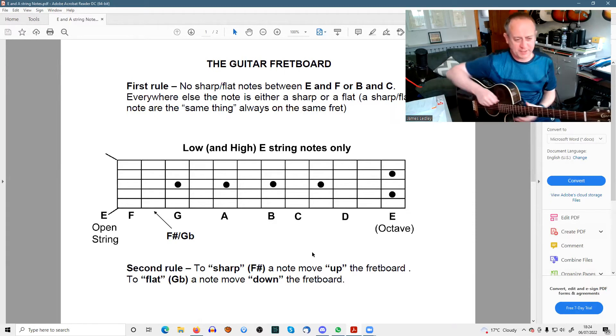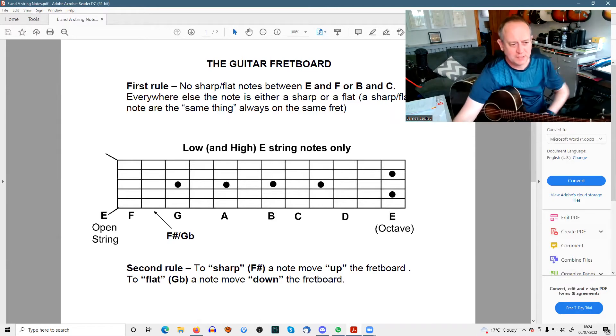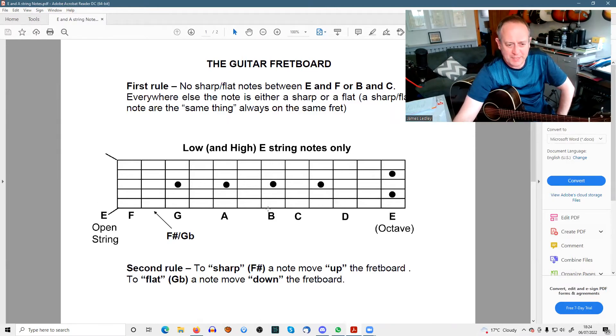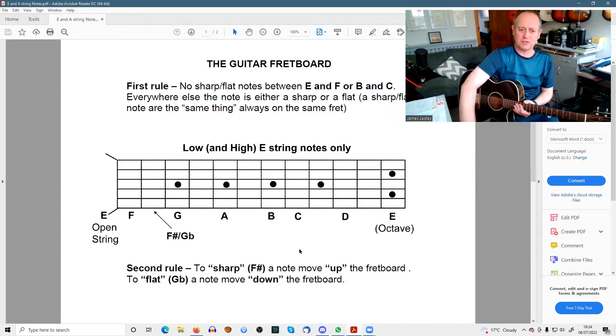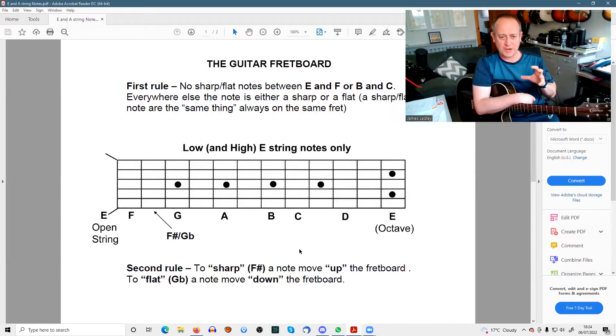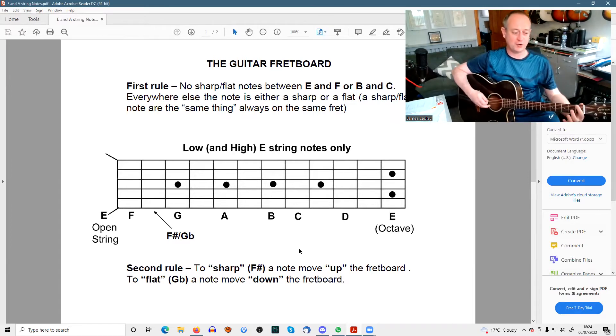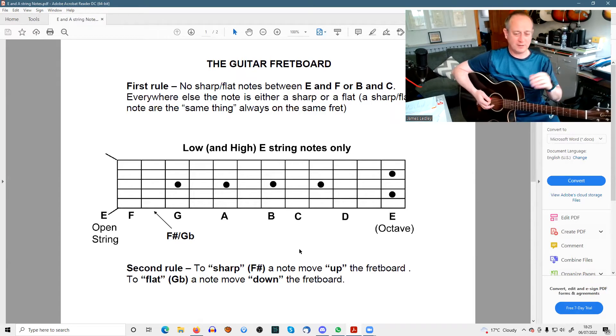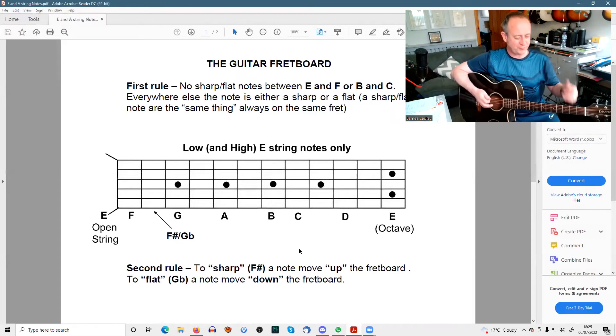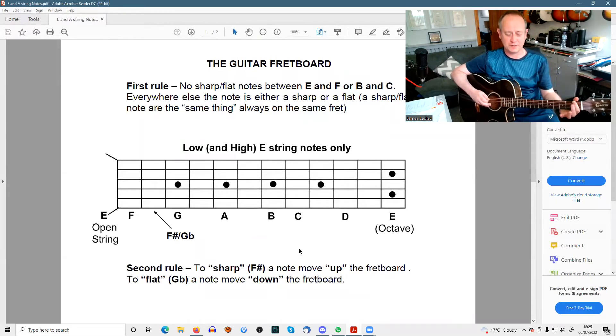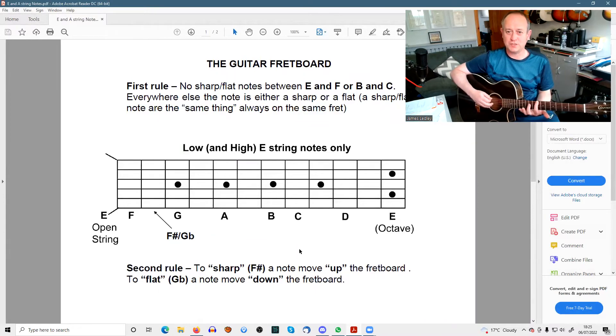If we have a quick look, we've got the open E string. The open E string goes straight to F, and B goes straight to C. Every single occurrence of those notes on the fretboard, it's exactly the same. You don't get E and then E sharp, because it would go on forever and get really confusing. So there's a cutoff point. E goes to F and B goes to C.